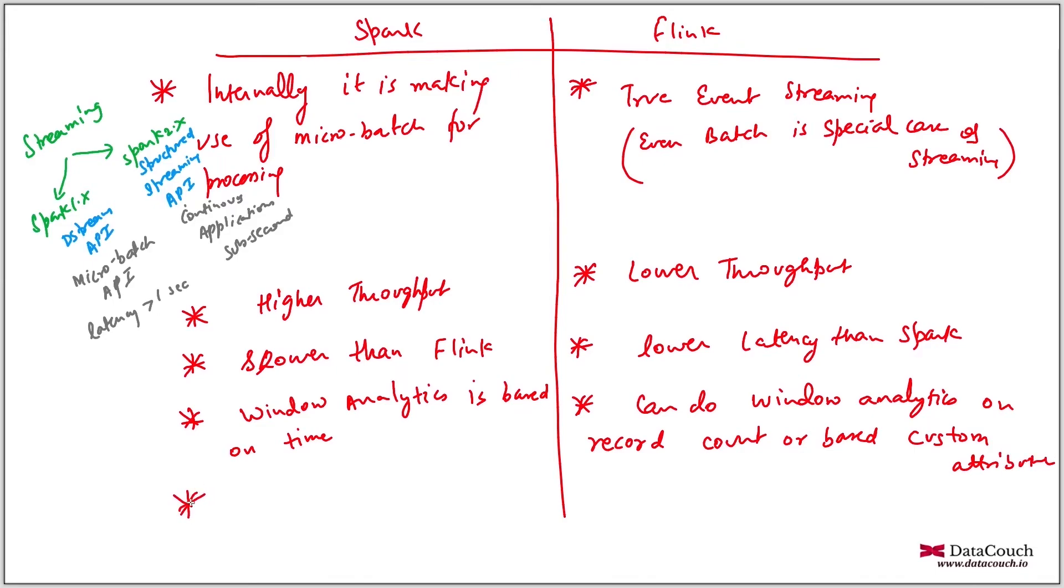Another difference between Spark and Flink is complex event processing. Implementing complex event processing in Spark is not easy. Similarly in Kafka streams, implementing complex event processing is not straightforward. You have to use some framework and then integrate that framework with Spark.